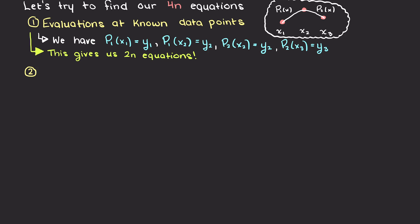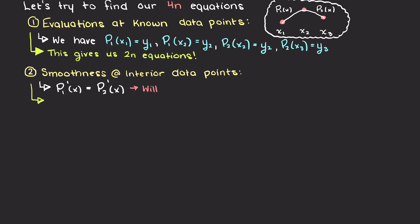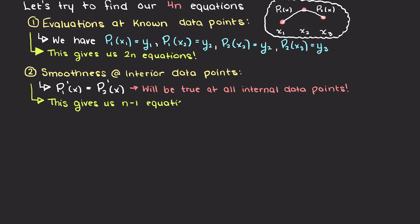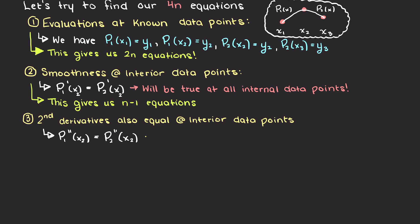For our intermediate data points, we can define continuity and say that the first derivatives need to be equal. This will be true at every interior data point that we have, and this will give us n-1 equations. We are therefore still missing n-1 equations. Likewise, we know that we want our interior data points to also have equal second derivatives, as we want our splines to be as smooth as possible. This gives us another n-1 equations, leaving us with 2 missing equations.